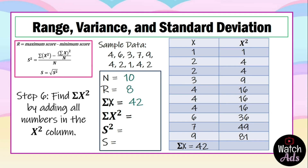For step 6, find the summation of x² by adding all numbers in the x² column: 1 + 4 + 4 + 9 + 16 + 16 + 16 + 36 + 49 + 81 = 232. The summation of x² equals 232.